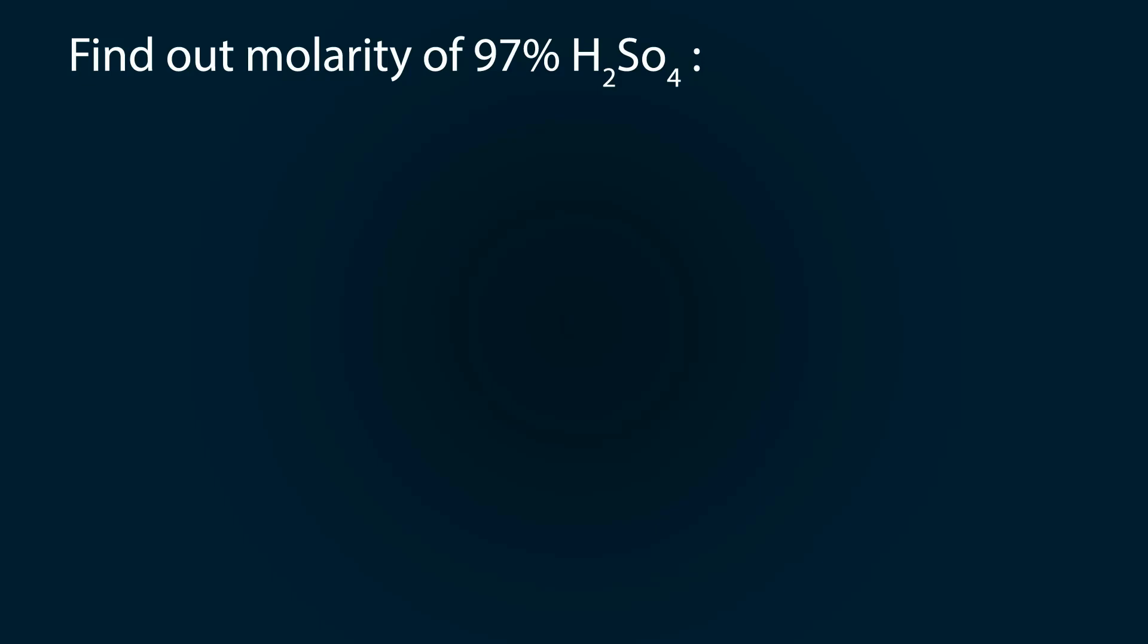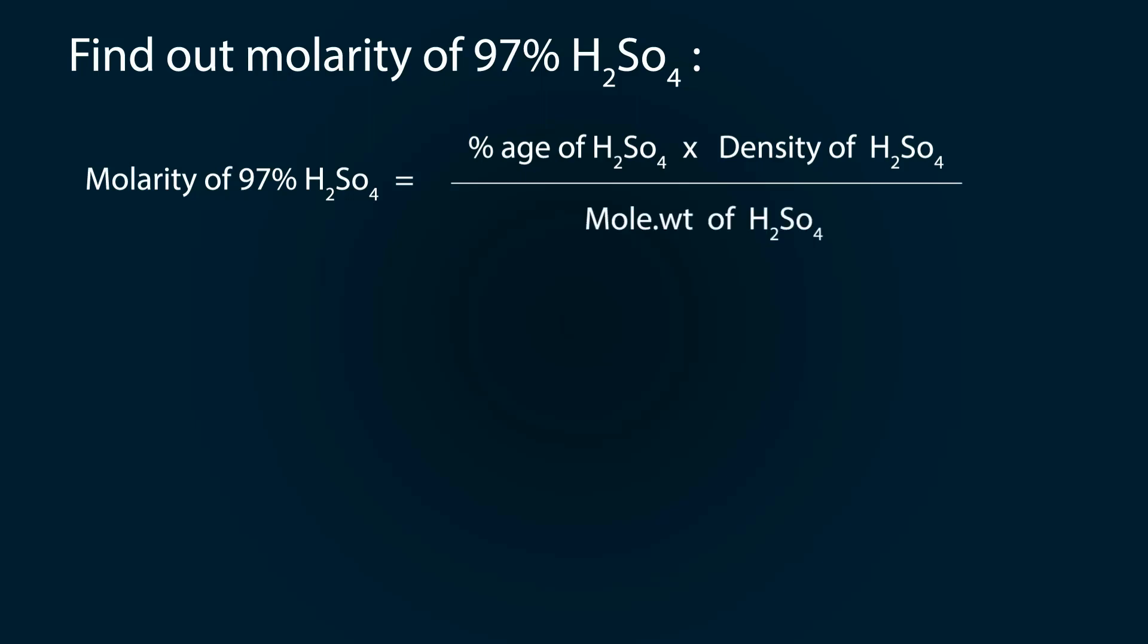Let's find out the molarity of 97% H2SO4. For this we will use the formula: molarity of 97% H2SO4 equals percentage of H2SO4 multiplied by its density divided by molar weight of sulfuric acid, which is H2SO4, and the whole multiplied by 10.